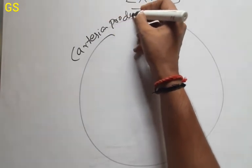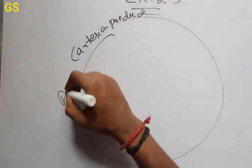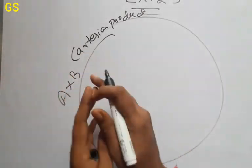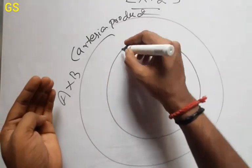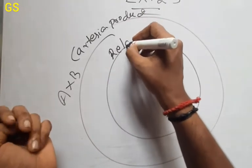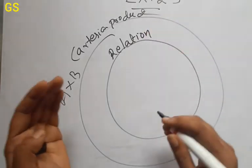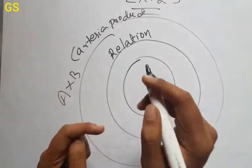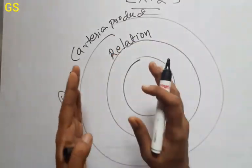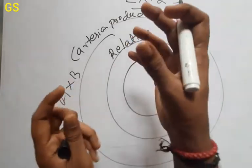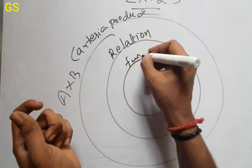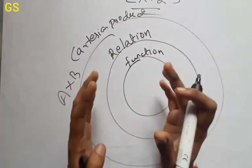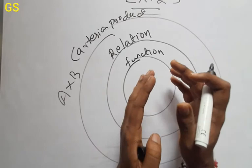The Cartesian product is A cross B. From this Cartesian product of sets A and B, we get ordered pairs. A relation is a subset of this Cartesian product. A special type of relation is a function — so: Cartesian product → subset is the relation → subset of that is the function.